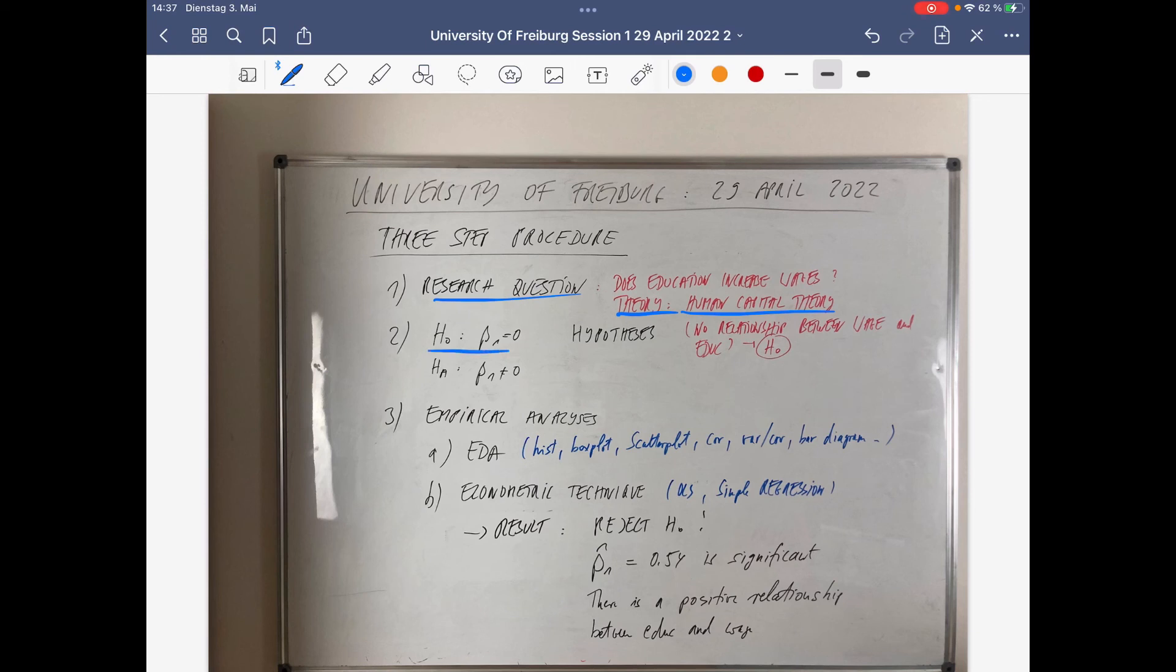In this case, it's the null hypothesis beta 1 equals 0, so there's no relationship between wage and education. The alternative hypothesis is that there is a relationship between these two, either positive or negative. We don't know. We expect, of course, a positive one, and we want to reject the H0.